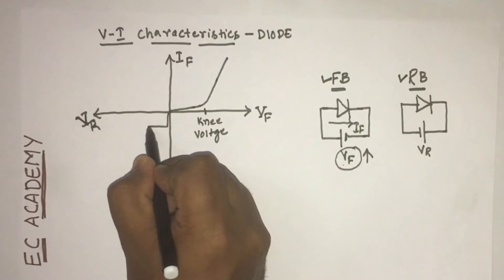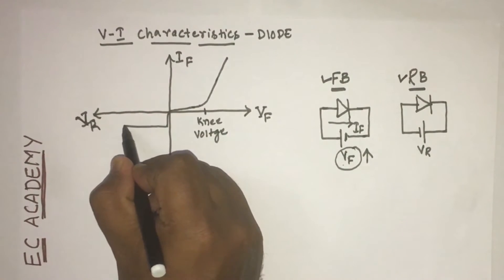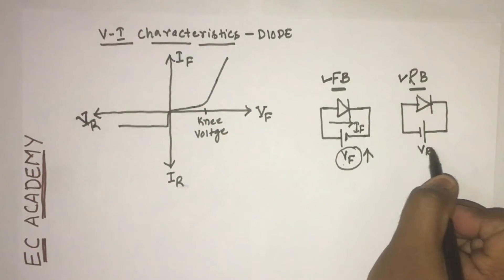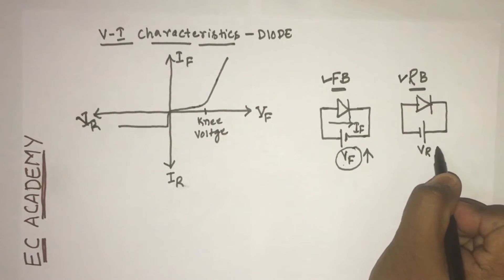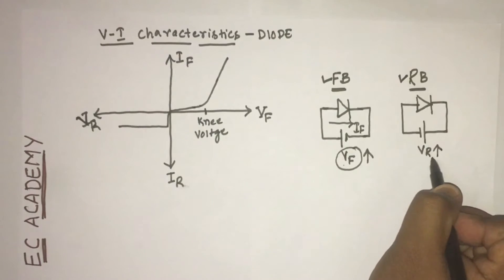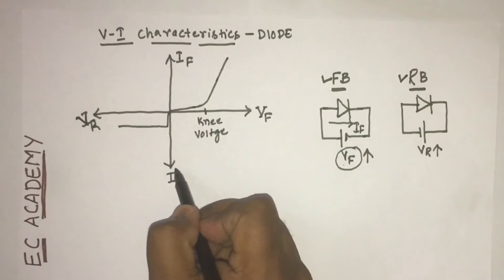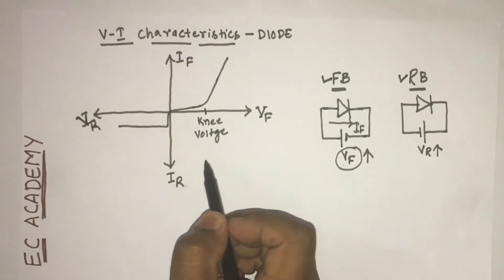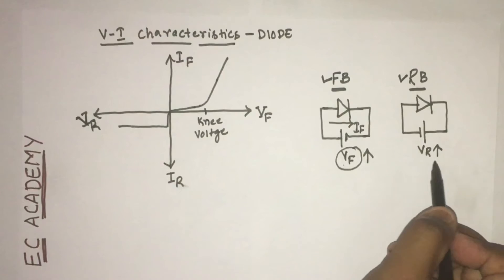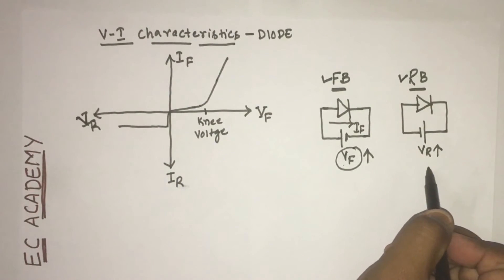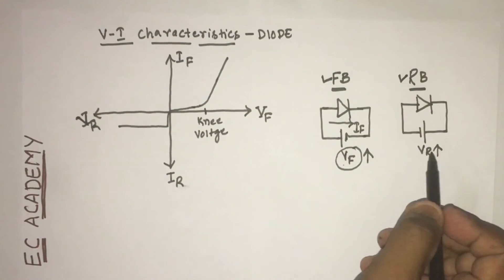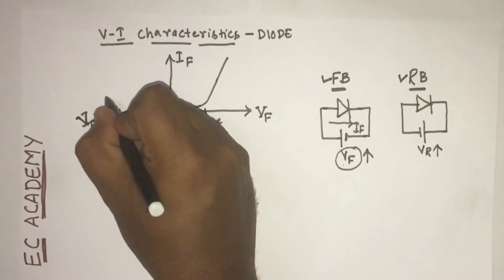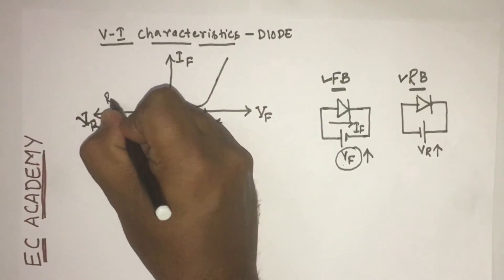This reverse current will be independent of the applied voltage, which means even if we vary Vr, this current will not vary. It will be independent of applied voltage Vr. Once the applied reverse voltage reaches reverse breakdown voltage, the junction breakdown occurs.